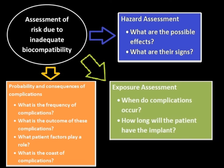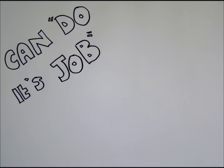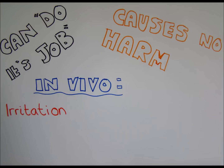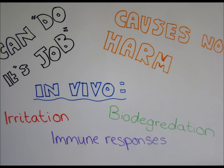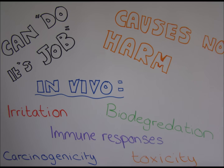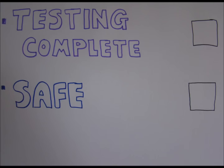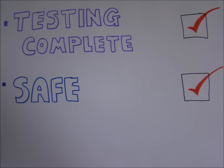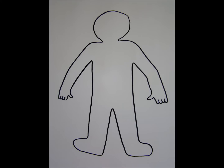To ensure biocompatibility is good, the polymer must fit specific criteria when in the body. These criteria are checked for during in vivo testing, alongside checks for irritation, biodegradation, and many more possible problems. Once testing is complete and the polymer found safe, it can be used in the body.